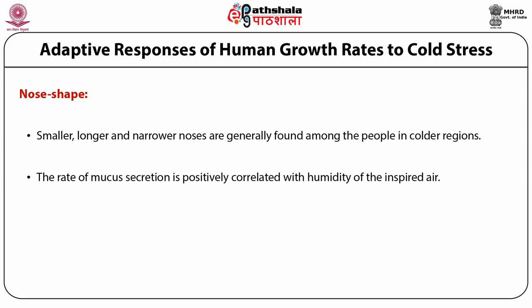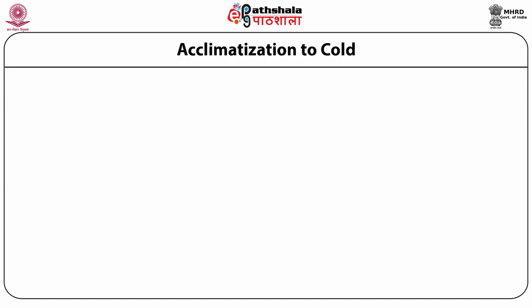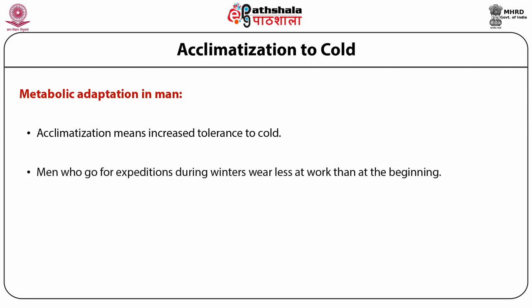Hair: straight hair is mostly found in people living in colder climates, as it keeps the neck and head warm and allows cold moisture to run off the scalp more easily. Acclimatization to cold — metabolic adaptation in man: acclimatization means increased tolerance to cold and develops gradually. Newcomers to the Arctic region wear all their clothing in the beginning, but as winter approaches and temperatures fall, they no longer seek extra protection. Men on winter expeditions were less cold over time than at the beginning.